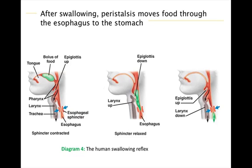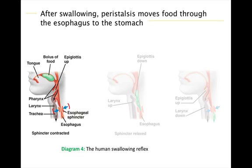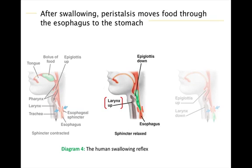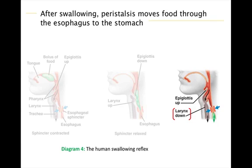Most of the time the esophageal opening is closed off by a sphincter, allowing air to enter the larynx and flow through the trachea to the lungs. However, when you start to swallow, the tongue pushes the bolus of food into the pharynx, triggering the swallowing reflex. The esophageal sphincter relaxes and allows the bolus to enter the esophagus. At the same time, the larynx moves upward and tips the epiglottis down over the opening to the larynx, preventing food from passing into the trachea. After the bolus enters the esophagus, the larynx moves back downward, the epiglottis tips up again, the breath passage reopens, and the esophageal sphincter contracts above the bolus.